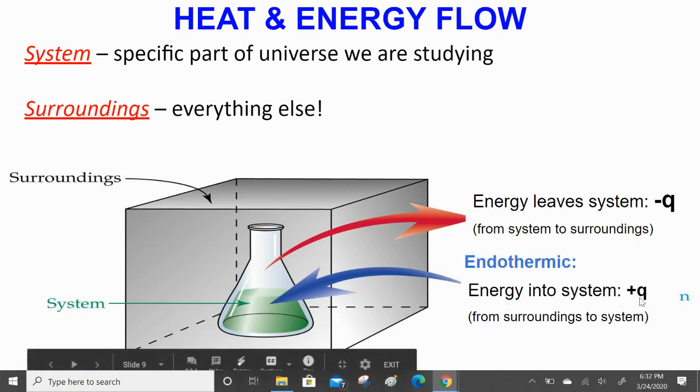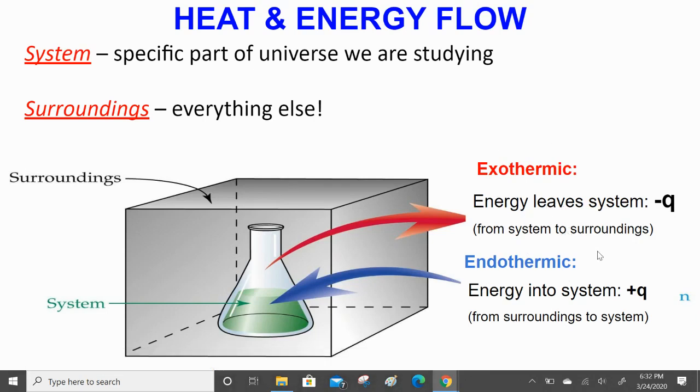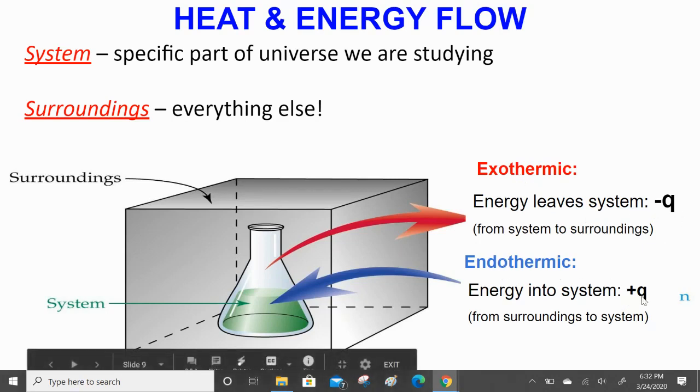When energy is going into the system, it's called an endothermic reaction. When energy leaves a system, it's called an exothermic reaction. Exothermic is related with a negative q value; endothermic is related with a positive q value.